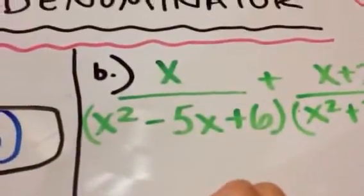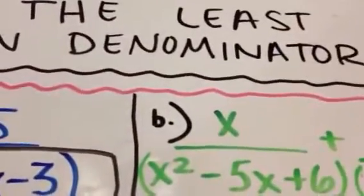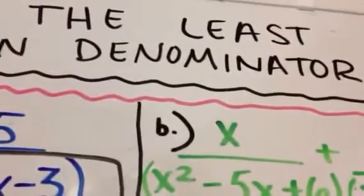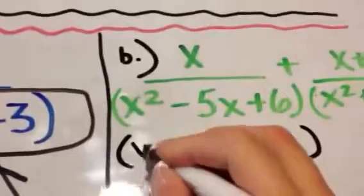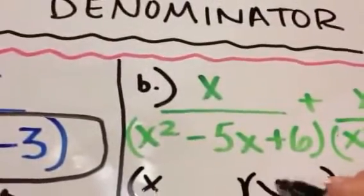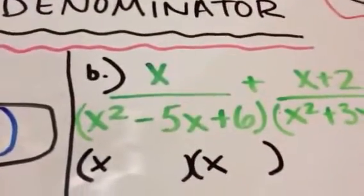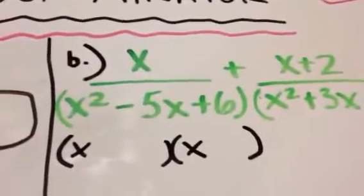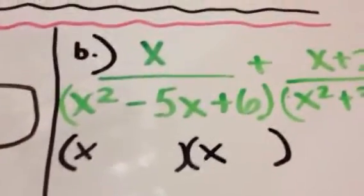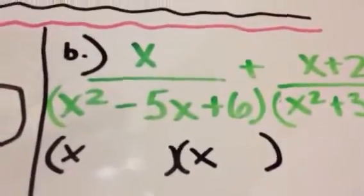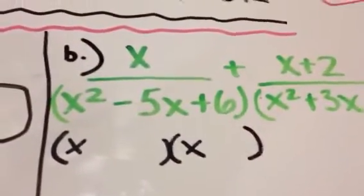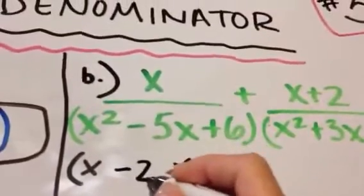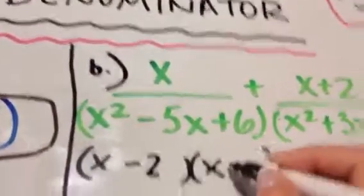Let's start with the first denominator. You start off right away by factoring. You can take your two x's. Now we need to find a number that multiplies to equal a positive 6, yet adds to equal a negative 5. It looks like the two numbers you can use are negative 2 and negative 3.